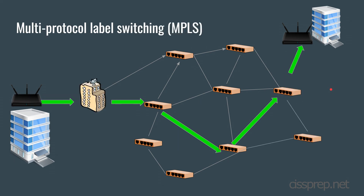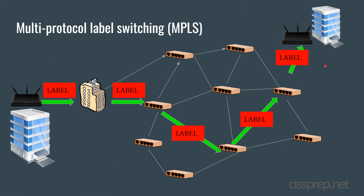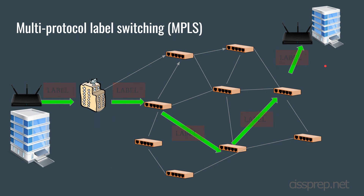MPLS has the term switching in it, but keep in mind it's a protocol, not a service. With MPLS, labels are added to the packets that help determine a more efficient path to its destination, rather than each router making an independent forwarding decision. The topics discussed in this video occur between layers 2 and 3 of the OSI model.